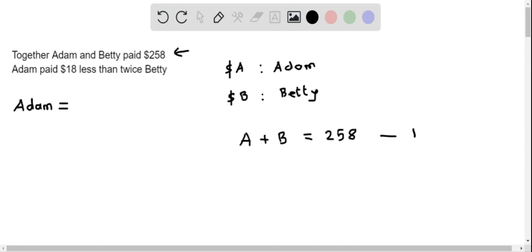Now let's consider the statement that Adam paid $18 less than twice Betty. Twice Betty is 2B, and $18 less than twice Betty is 2B - 18. Therefore, Adam's amount equals 2B - 18. This is equation two.